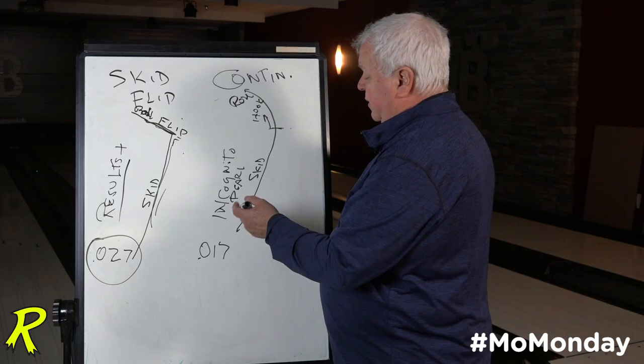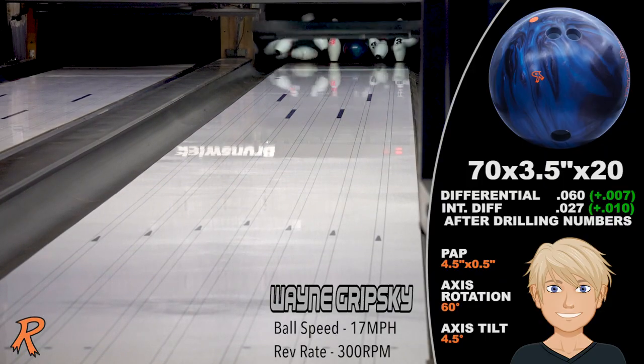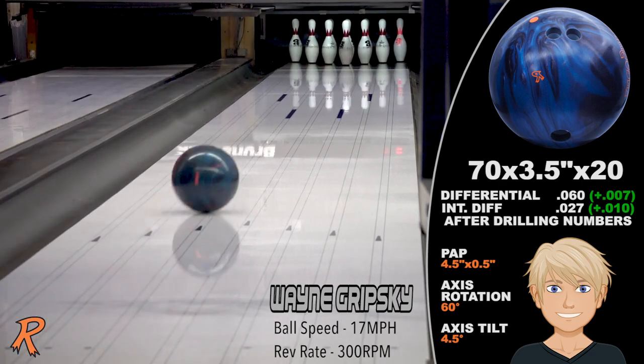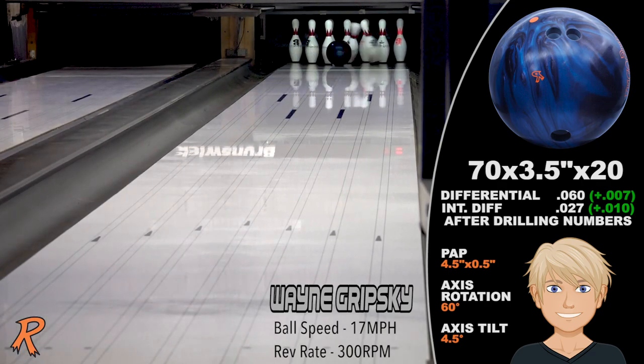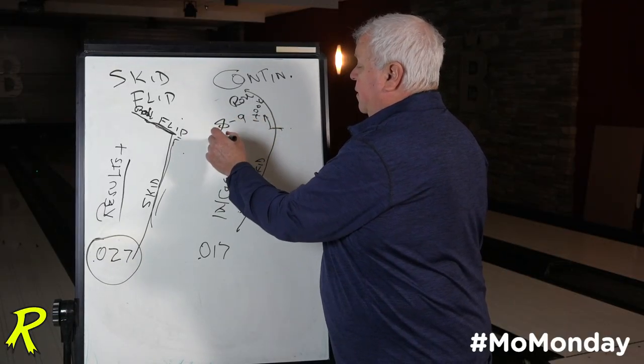In the case of the Incognito Pearl, where it's more of a gradual change of direction, it gets to the break point, begins its hook phase, and continues through the pins. You're going to see more splitting of the 8-9 here than you might here.